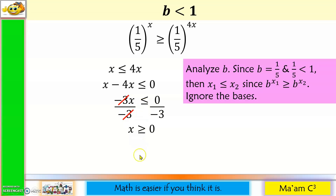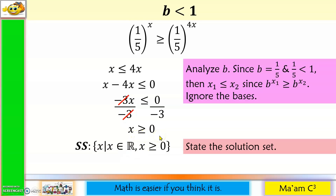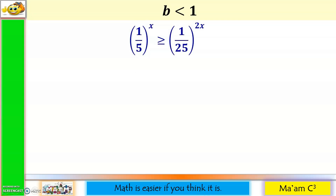x minus 4x is negative 3x. Let us divide both sides by negative 3. When you divide an inequality by a negative number, the inequality symbol is reversed, so x is greater than or equal to 0. The solution set is x greater than or equal to 0, and in interval notation that is 0 to positive infinity, with a bracket because there is 'or equal to.' Let us solve the same problem but with another method.